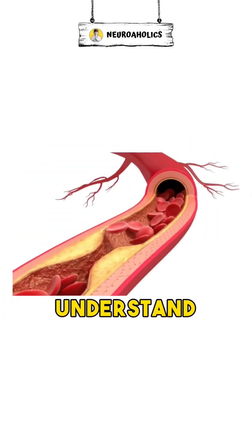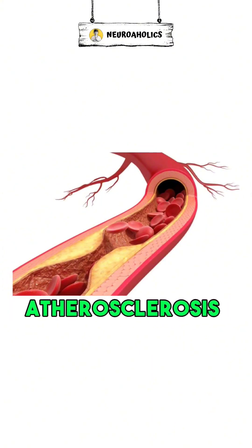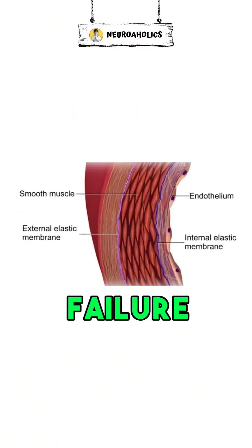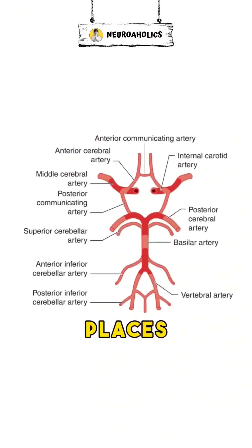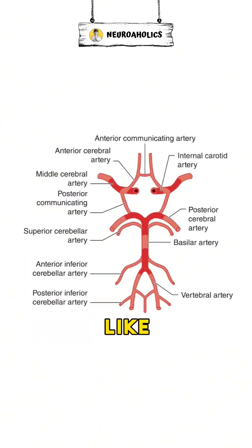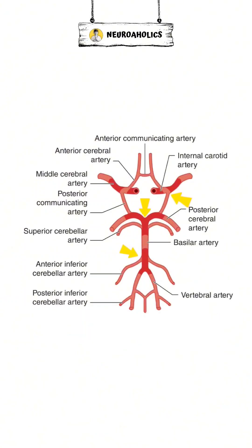Even though we don't fully understand how atherosclerosis develops, endothelial cell failure is thought to be an early step. This tends to occur at places where blood flow is low or disrupted, like bends and branch points in large and medium-sized arteries.